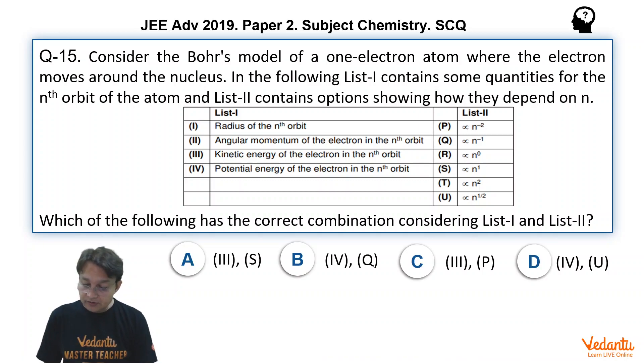Column A, option A: 3 matches with S, kinetic energy matches with S, it is not possible. 4 matches with Q, potential energy matches with Q, it is impossible. 3 matches with P, kinetic energy is proportional to 1 upon n square. Of course it will match. So C is the correct option.